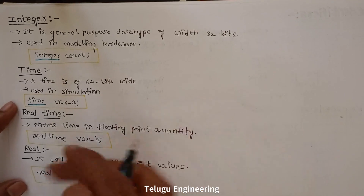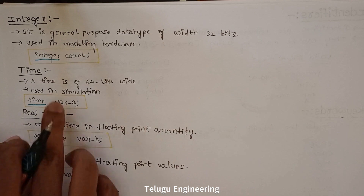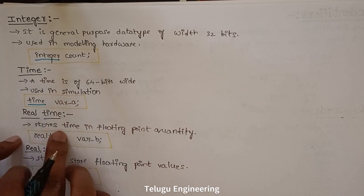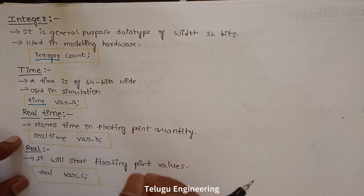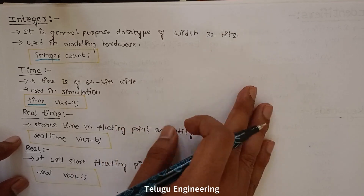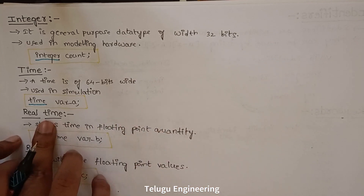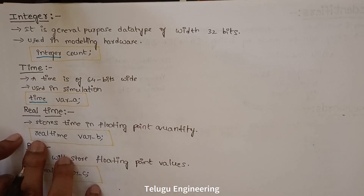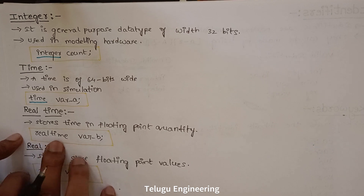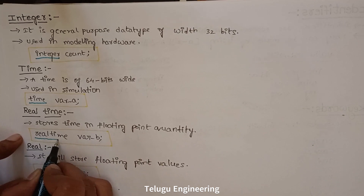Similarly, we have realtime. Realtime works the same way as time, but it stores floating point quantities — floating point numbers. There is a decimal point, so it stores floating point time values. Realtime is the data type, and the variable name follows it.